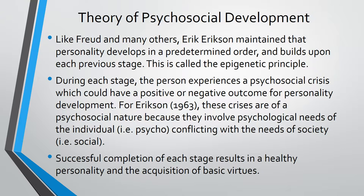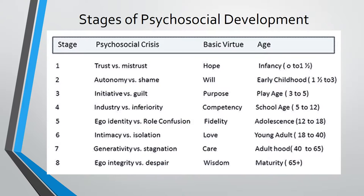Erikson believed that successful completion of each stage results in a healthy personality and the acquisition of basic virtues. There are eight stages of psychosocial development, each yielding a specific virtue upon successful completion, and each stage takes place during a certain age range in life. The stages are: Stage 1 — Trust vs. Mistrust; Stage 2 — Autonomy vs. Shame; Stage 3 — Initiative vs. Guilt; Stage 4 — Industry vs. Inferiority.